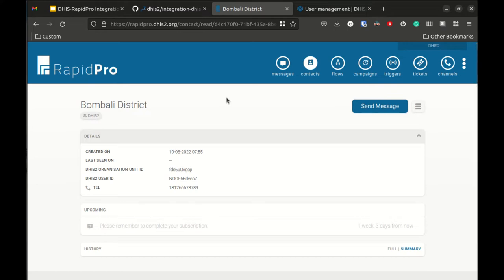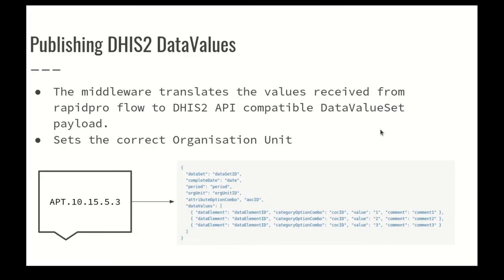Now let's look at the second goal: getting aggregated reports from RapidPro and updating them as data value sets in DHIS2. The main job of the middleware in aggregated value synchronization is reading the aggregated values from RapidPro — which come in a minimal format that can be accommodated within an SMS — and then translating them to a format compatible with DHIS2. The middleware also sets the correct organization unit into the data values by reading it from the corresponding user.